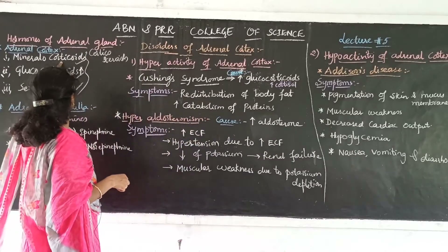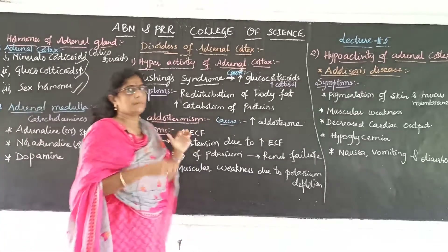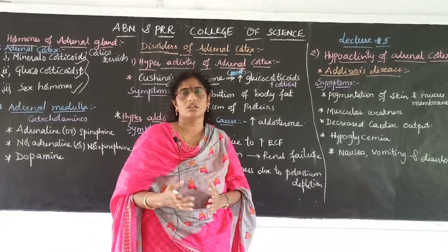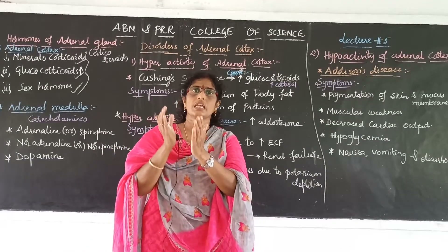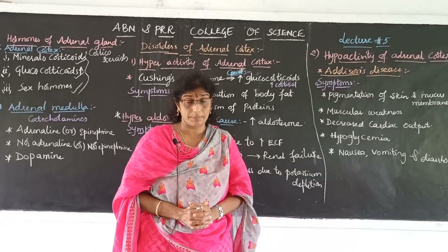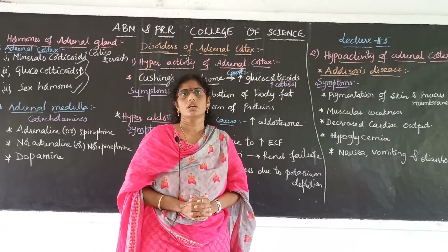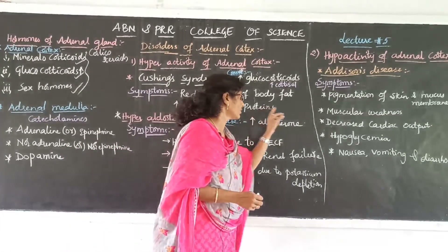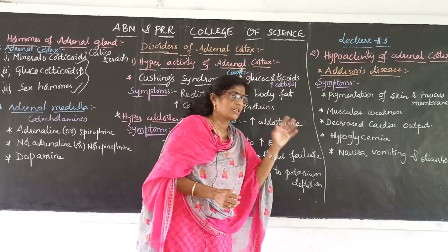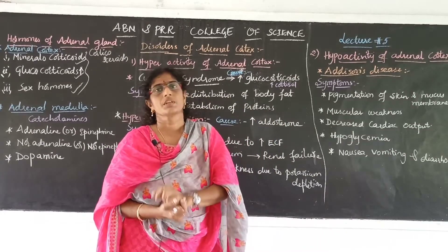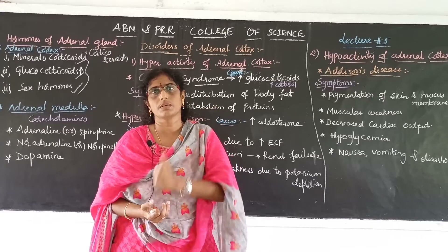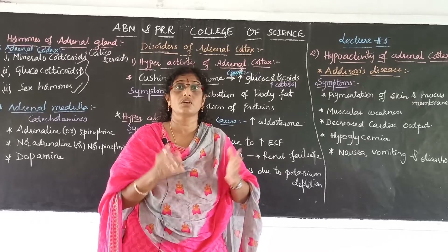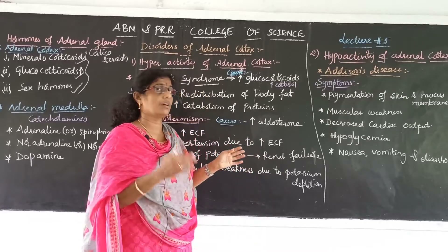Aldosterone is the prime component of mineralocorticoids. Mineralocorticoids regulate mineral metabolism. They help maintain sodium and potassium levels. Aldosterone is also called a life-saving hormone. 95% of the mineralocorticoid activity is accounted for by aldosterone, which plays the main role in keeping potassium levels normal in the body.